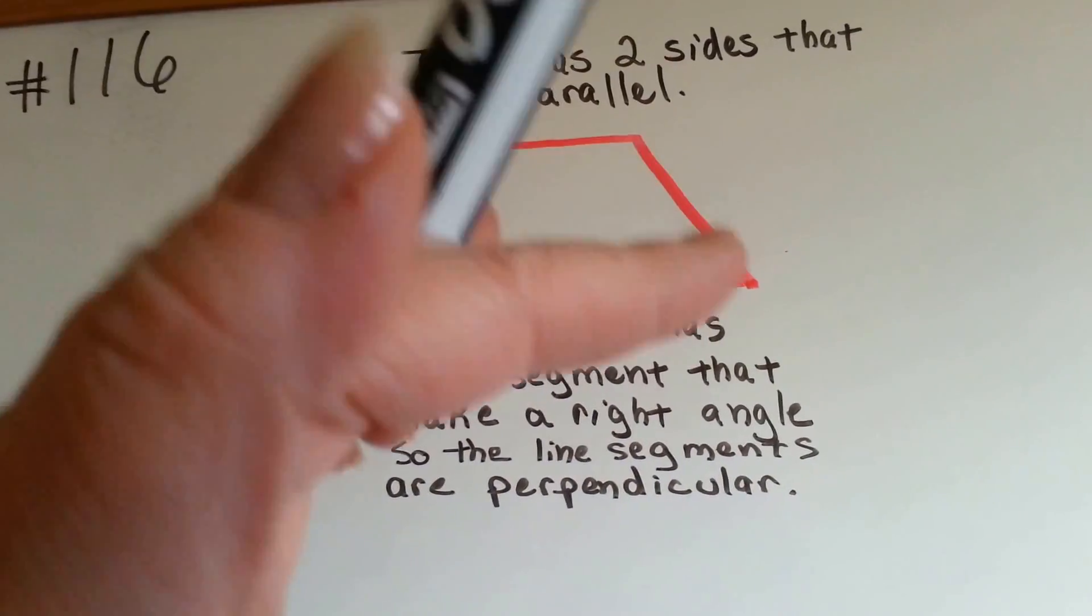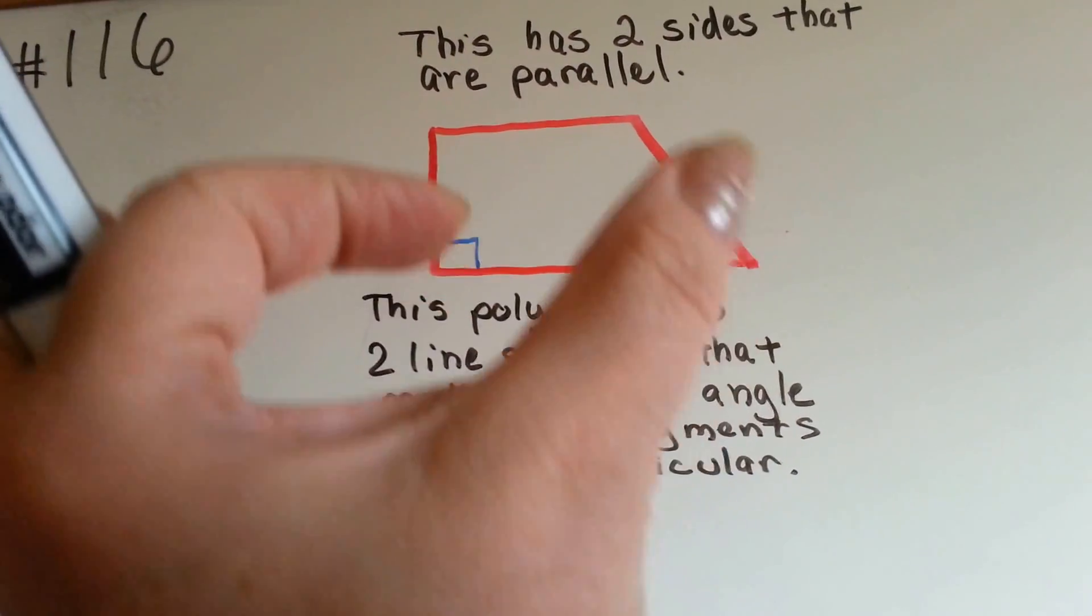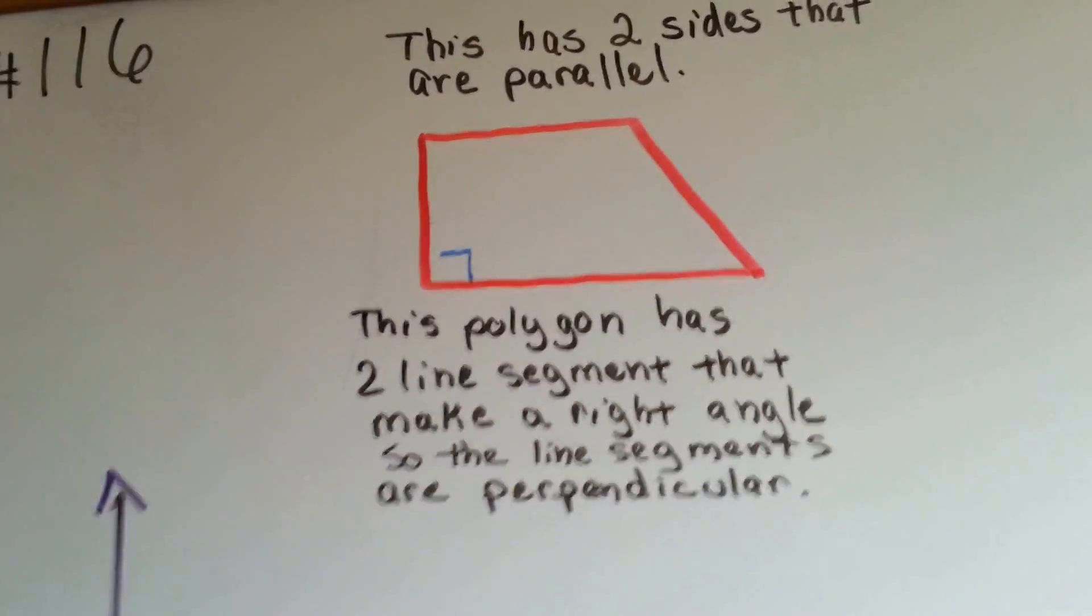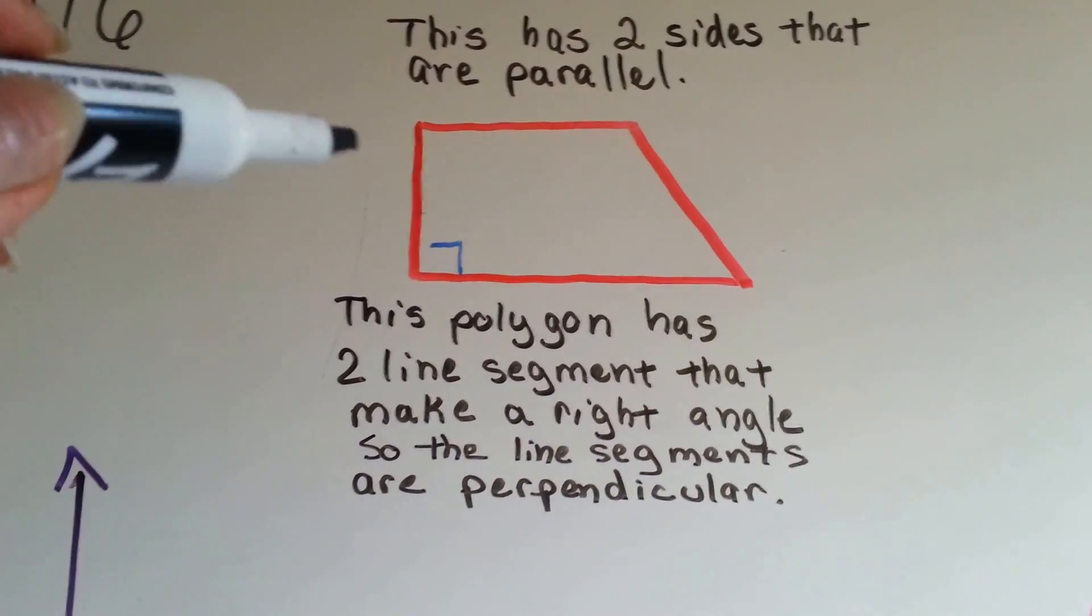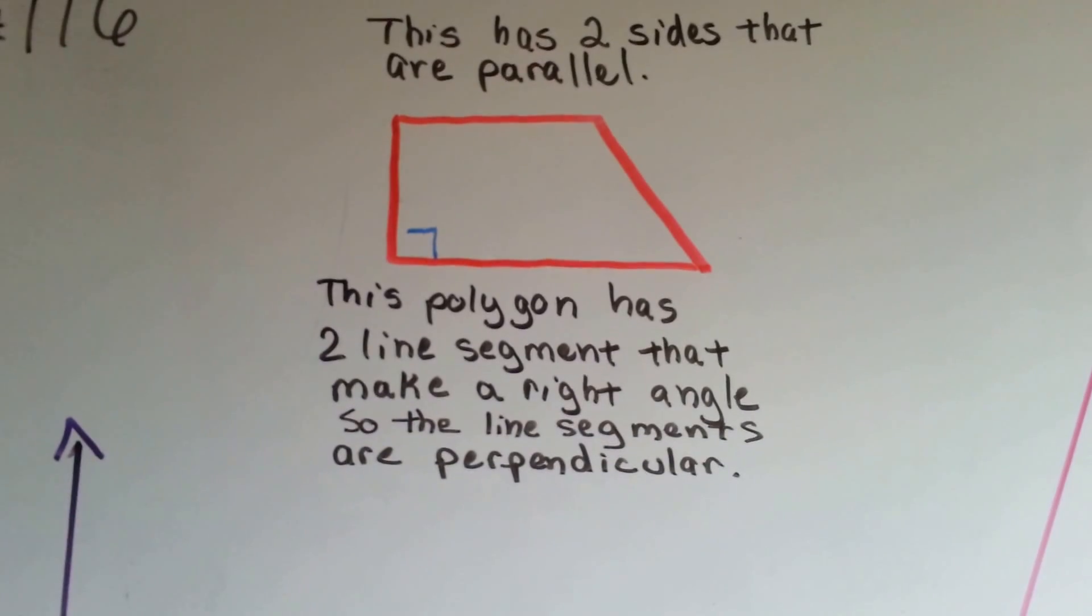This side is not parallel with this side because they're going kind of crooked. So the top one and the bottom one are parallel lines.